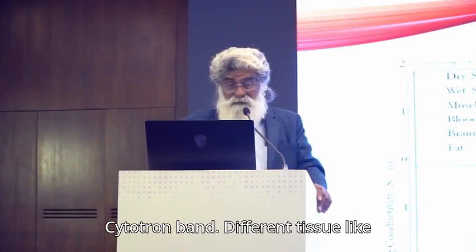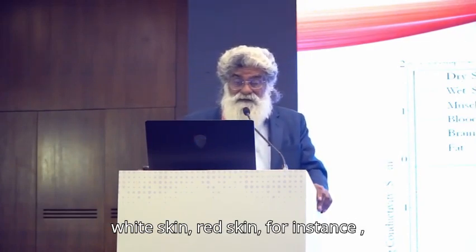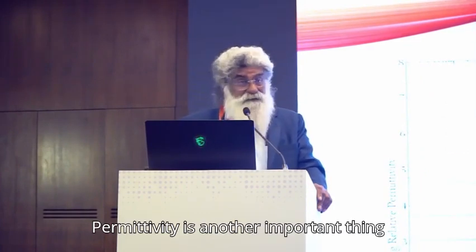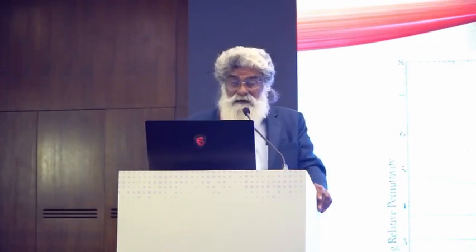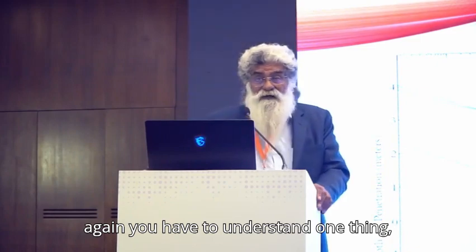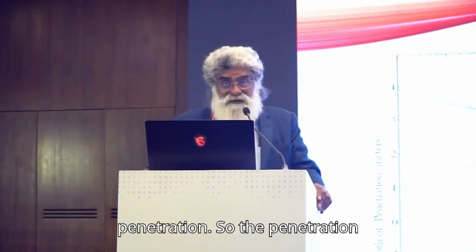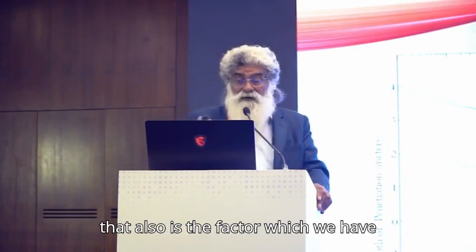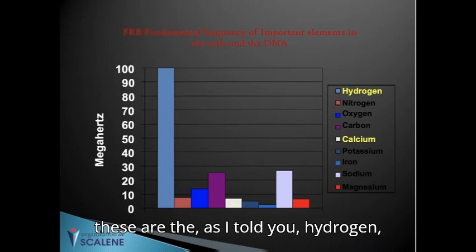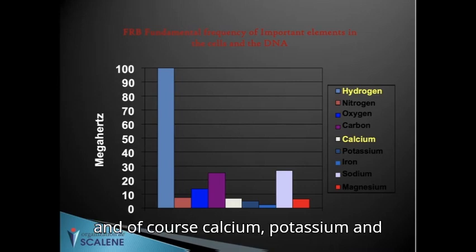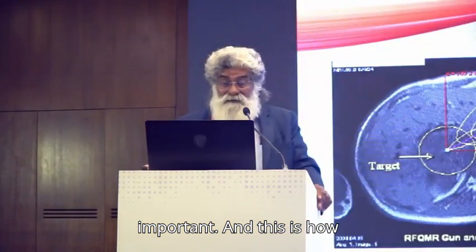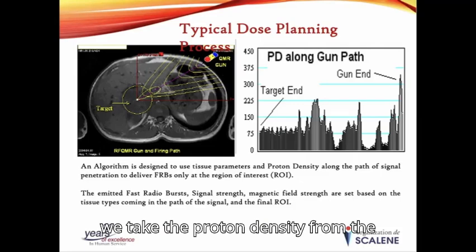This is the conductivity of the tissue in the FRB range. You can see the Cytotron band, different tissues — dry skin, wet skin, muscles, brain, white matter, fat, etc. There is also tissue permittivity, which is another important thing to understand in Cytotron. Then the depth of penetration — you have to understand that the higher the frequency, the lower is the penetration. The key elements are hydrogen, nitrogen, oxygen, carbon, and of course calcium, potassium, and others. This is how we take the proton density from the skin to the target.